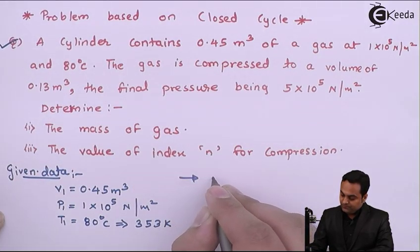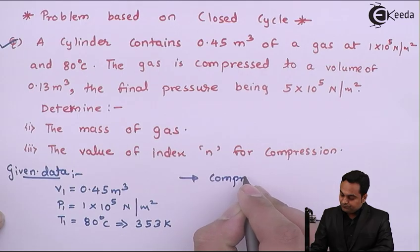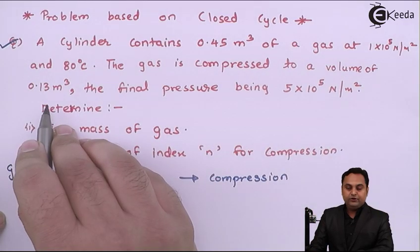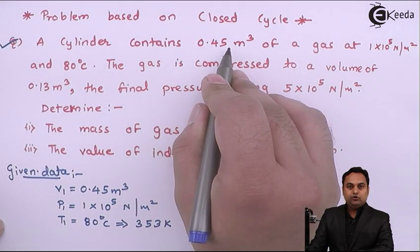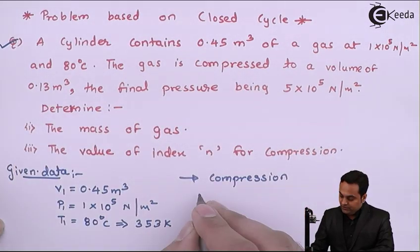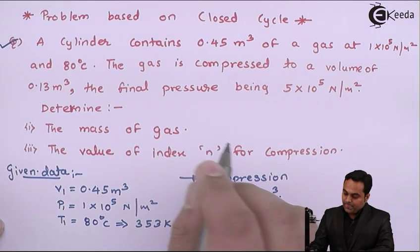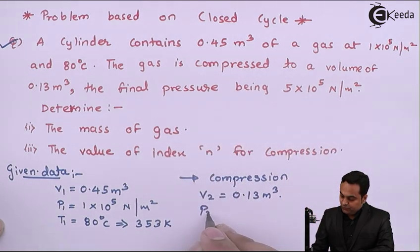so V2, that is after compression, has become 0.13 meter cube and the final pressure P2 has increased after compression. As we can see here, initially the pressure was 1×10^5 Newton per meter square